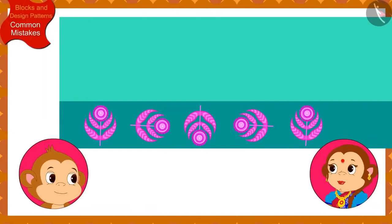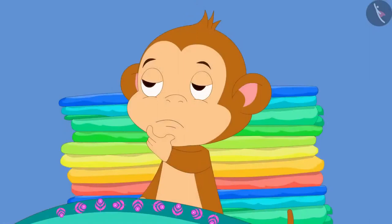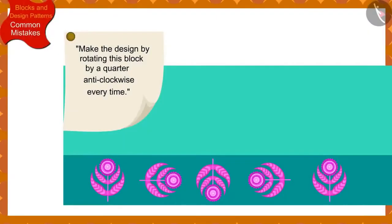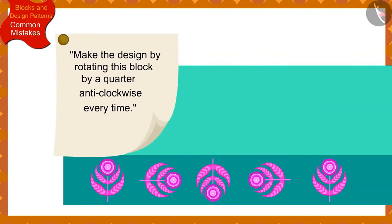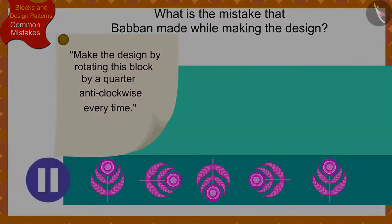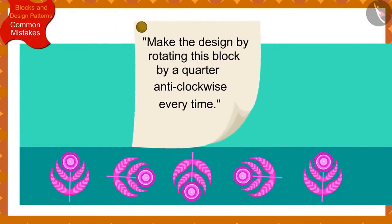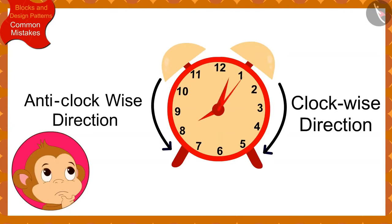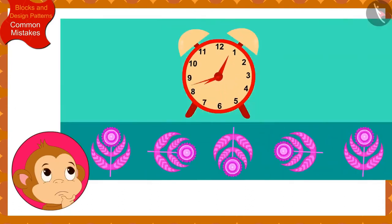Babbanji, you made the wrong design. Banno told Babban. Poor Babban could not understand what mistake he made. Children, can you tell by looking at Banno's instructions and Babban's design what is the mistake that Babban made? Actually, as per the instructions written by Banno, Babban had to rotate the block by a quarter in the anti-clockwise direction every time. But Babban got confused between the clockwise and anti-clockwise directions and accidentally made the pattern by rotating the block by a quarter in the clockwise direction every time.